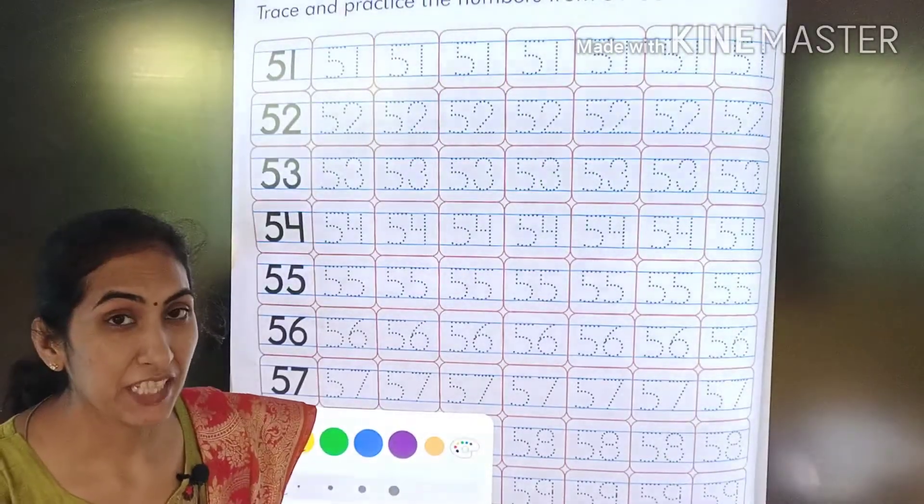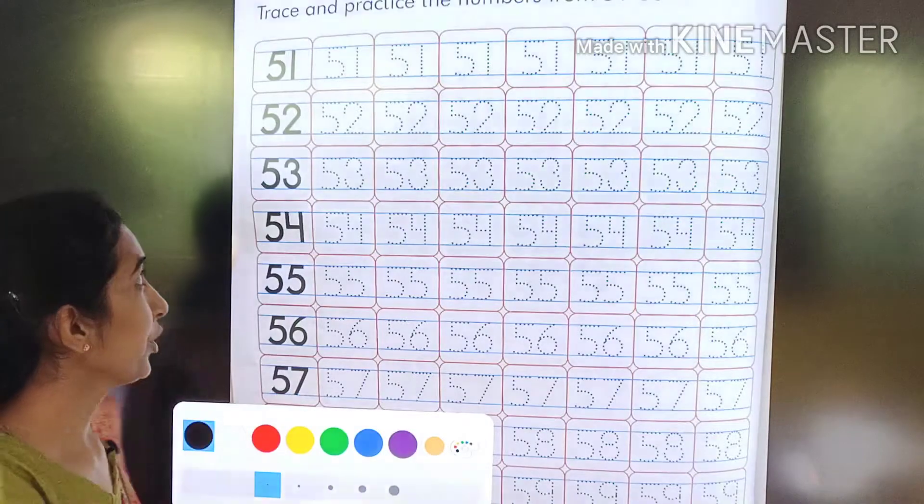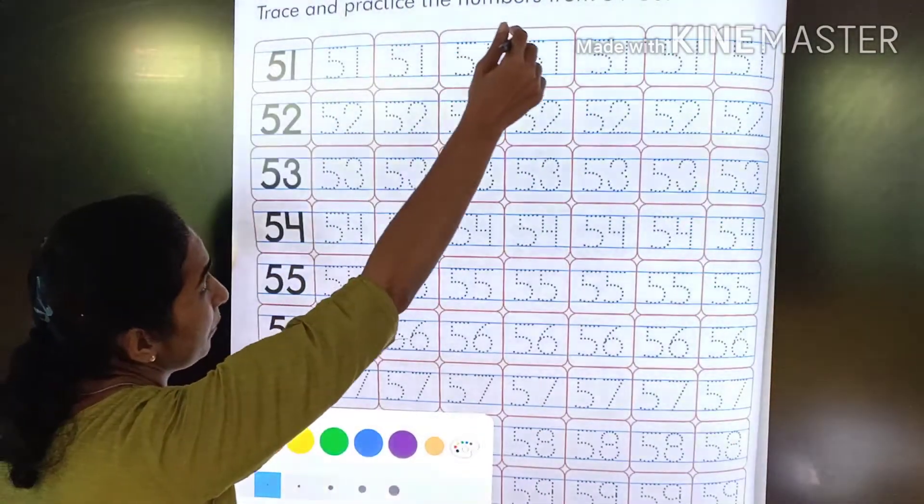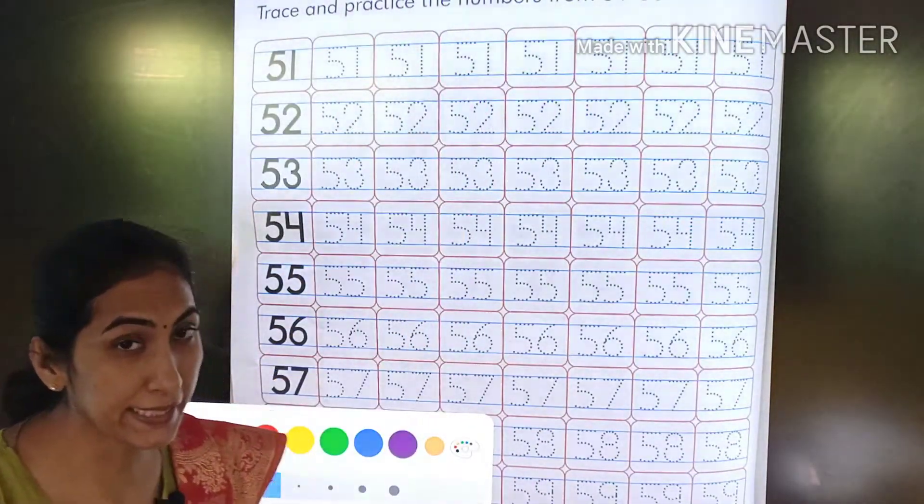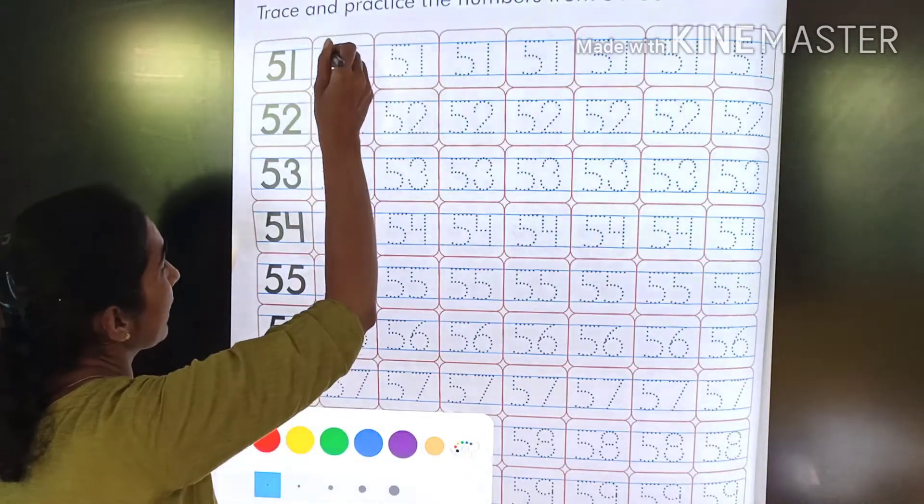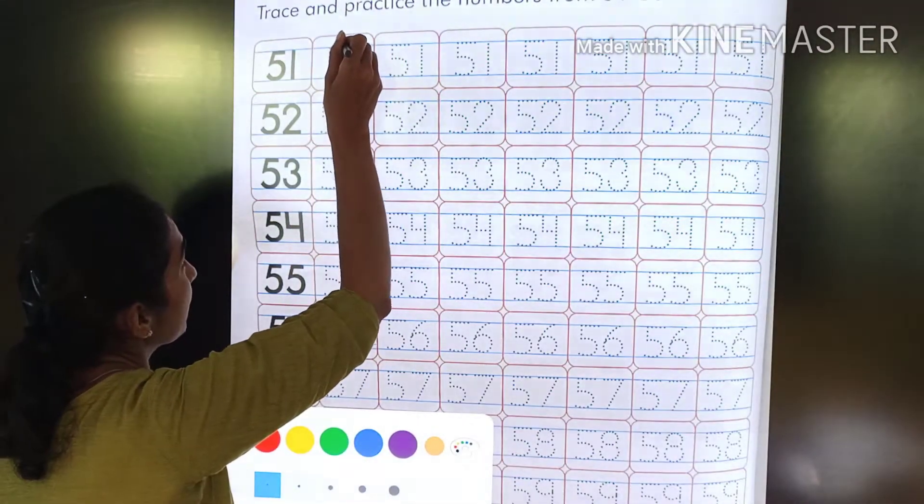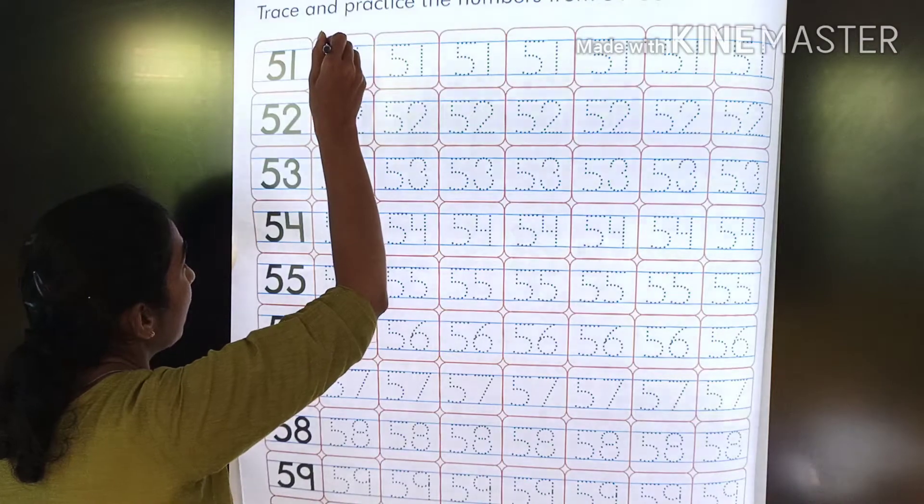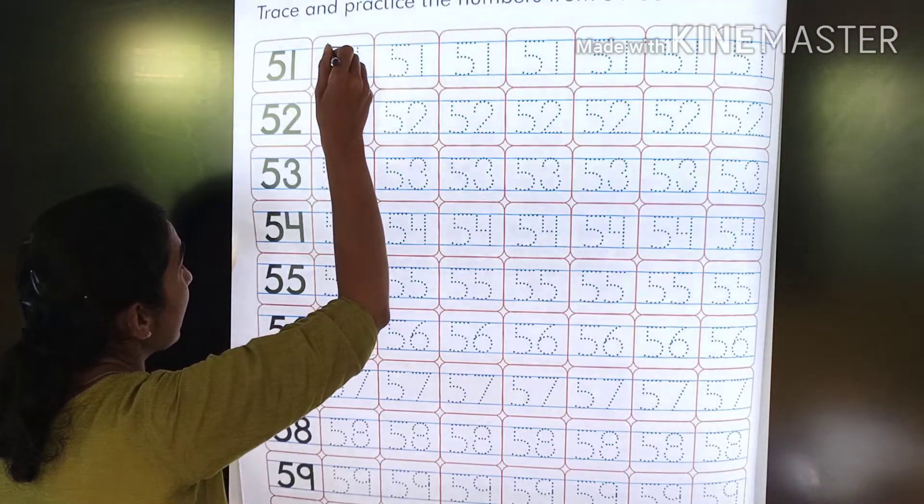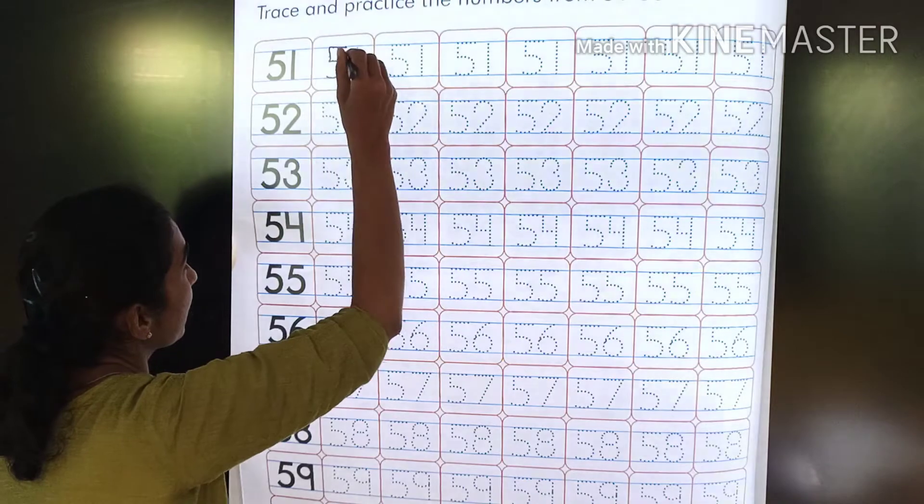So this is page number 92. What you have to do? Trace and practice the numbers from 51 to 60. How to trace? See, from here. Five sleeping lines, standing line and a complete curve.